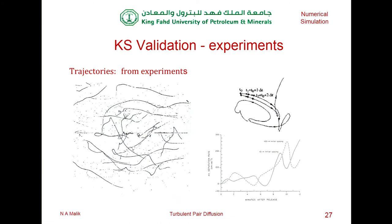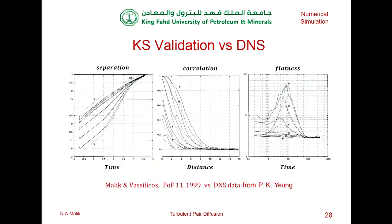KS has been validated in the past. In 1999, we published a paper comparing KS with the available DNS at the time, with quite good results — very good matching. We even got the fourth-order flatness to be very well matched, although KS is not specifically designed for this. That was reasonably good, although this was for low Reynolds number.